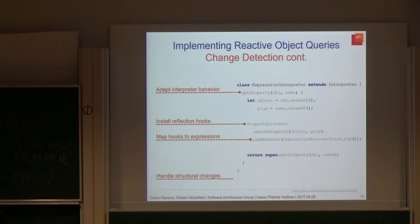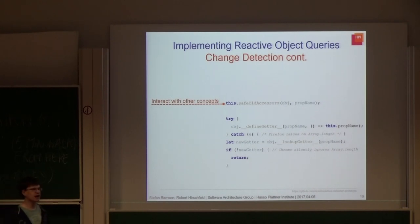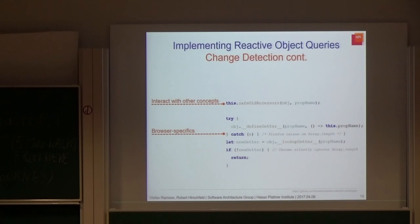Since we are in an object-oriented language, we also have to deal with structural changes that might occur. For example, when we assign a complex object to a monitored property, we have to update our dependencies to observe the new object as well. Another thing we have to handle is interaction with other concepts that use the very same metaprogramming facilities. If another concept also uses property accessors, we have to integrate with them. Finally, we have to deal with browser-specific implementations — for example, applying a property accessor on the length attribute of an array causes Firefox to raise an error while Chrome silently ignores it.